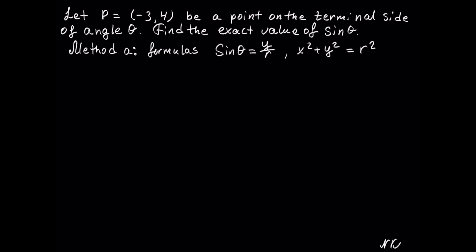The first method is using the formulas: sine of theta equals y over r, and x squared plus y squared equals r squared. Given the point negative 3, 4, we know that x is equal to negative 3 and y is equal to positive 4.